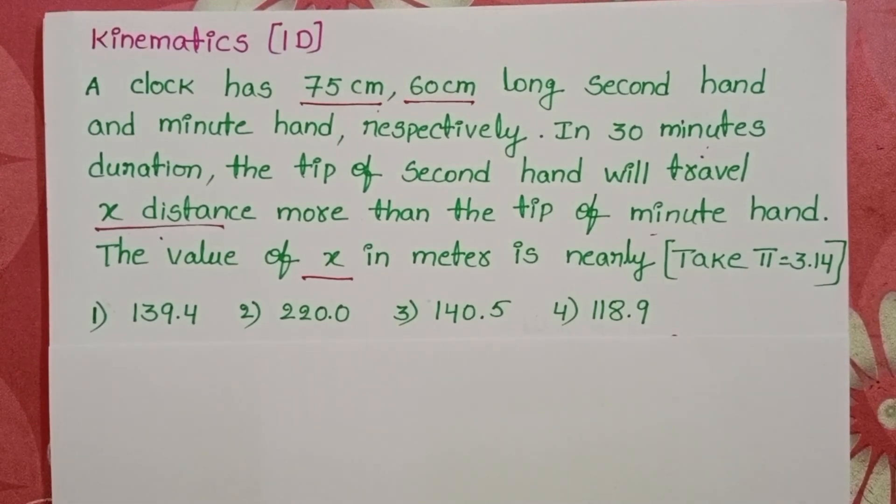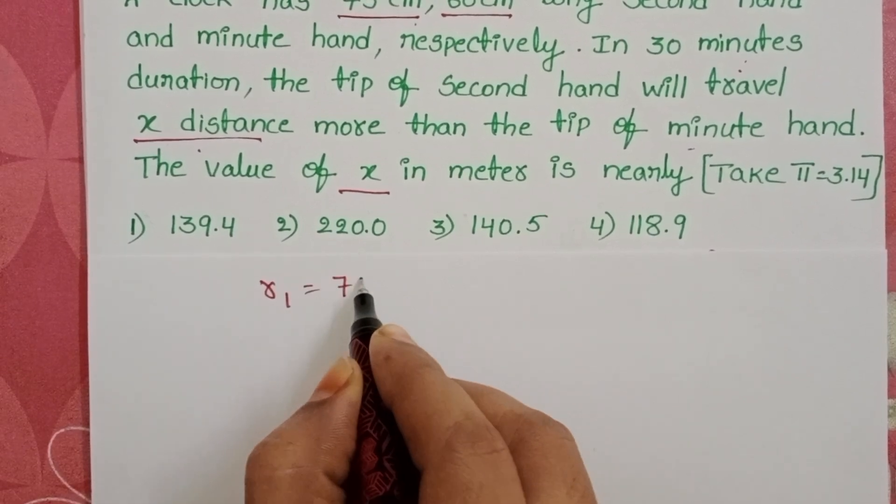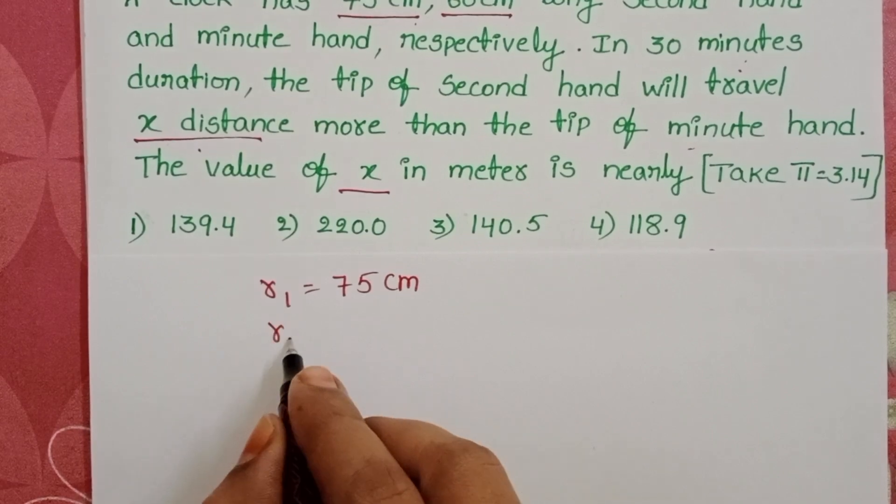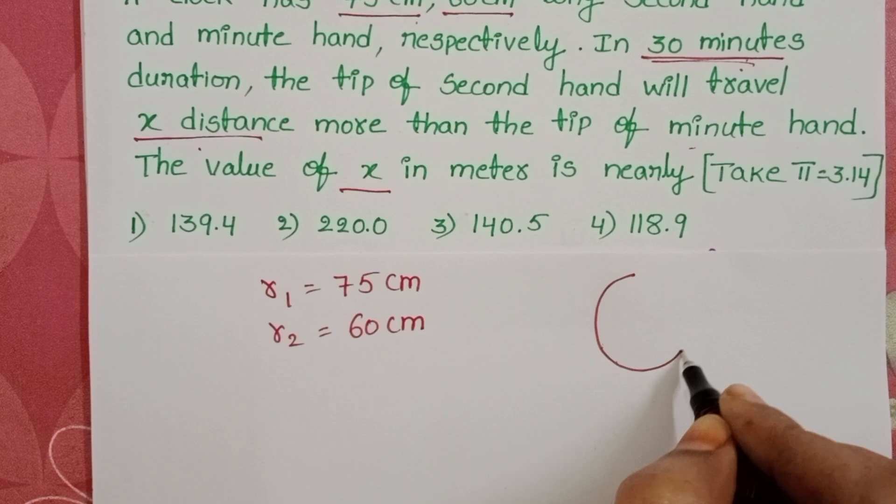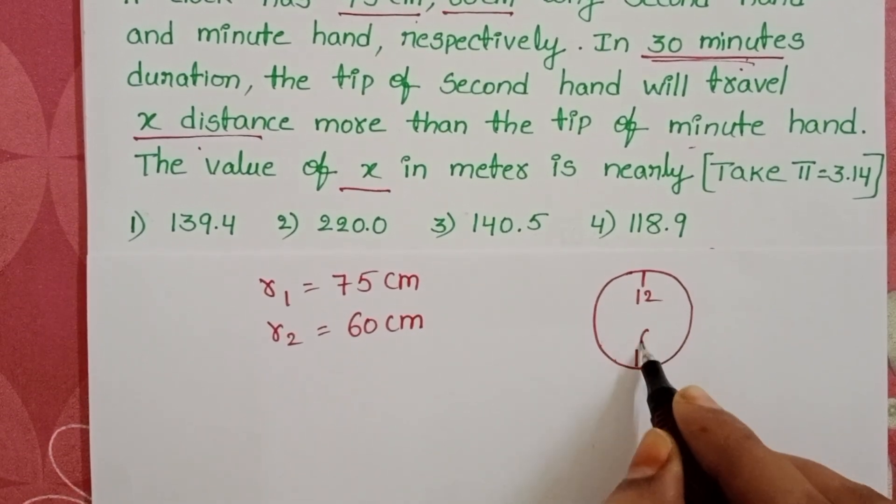In the given question, length of the second hand equals 75 cm, and the length of the minute hand equals 60 cm. In the clock, this is 12 and this one is 6.